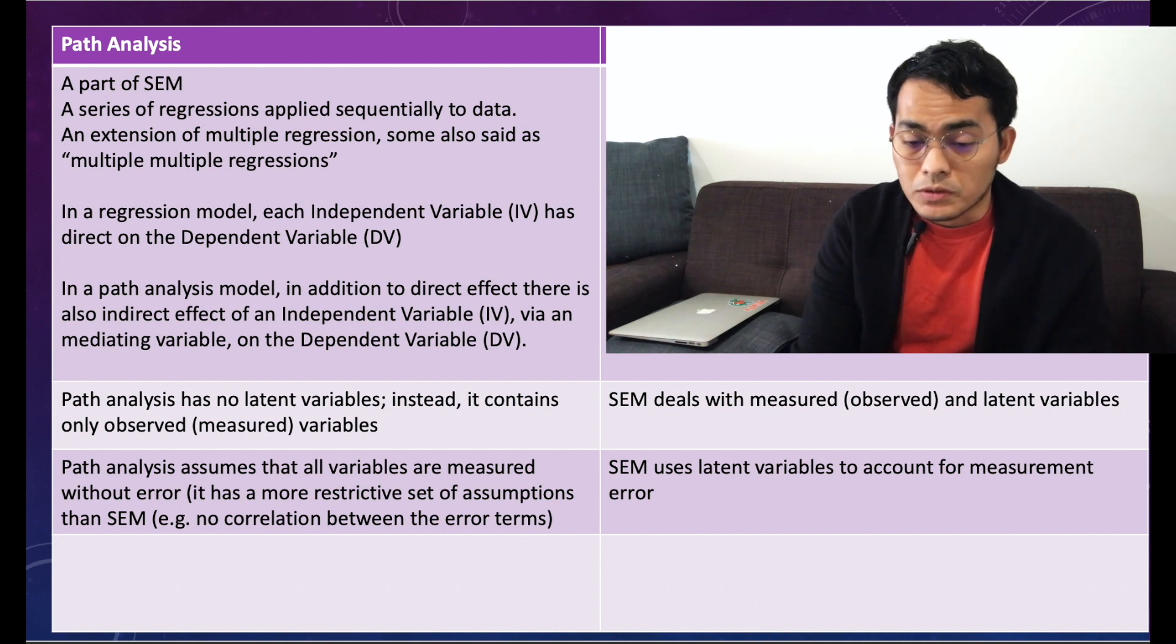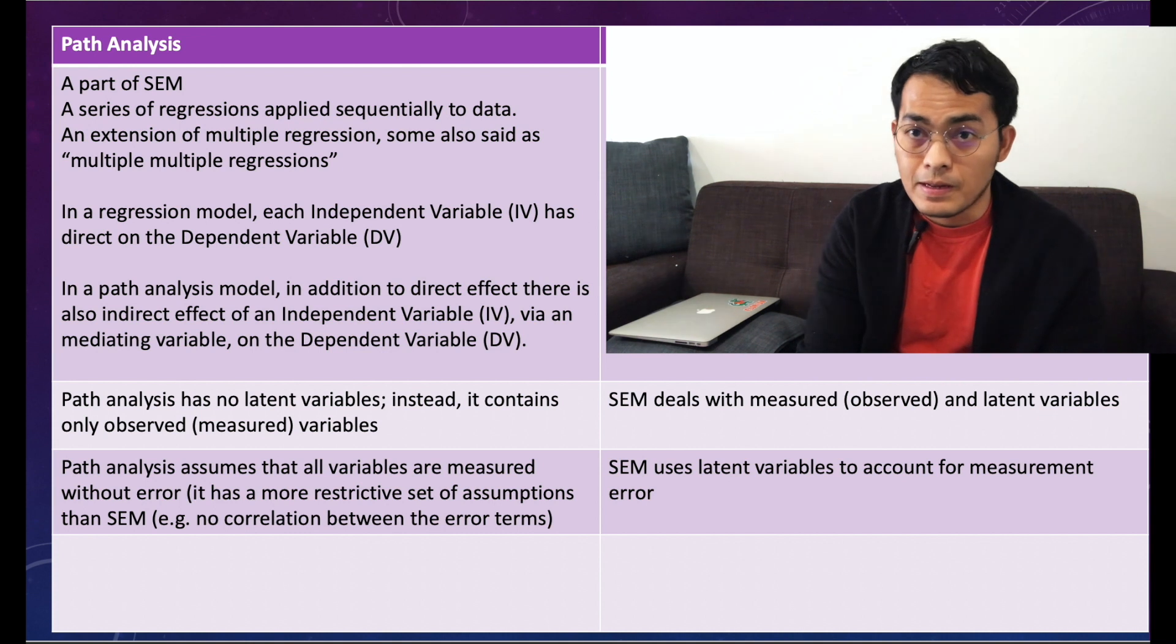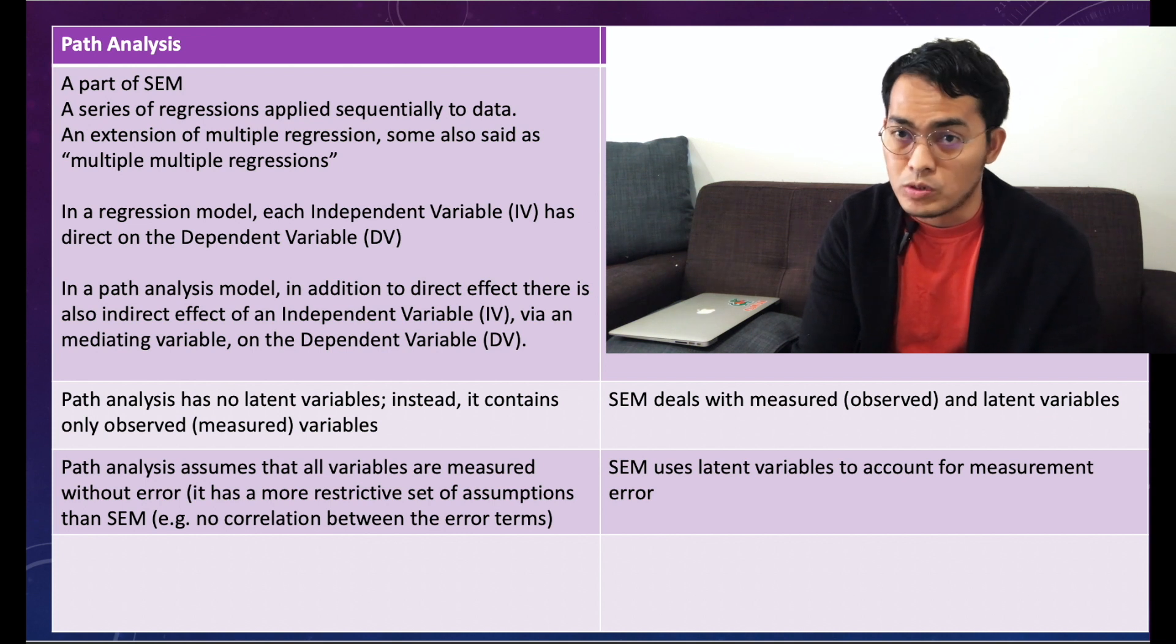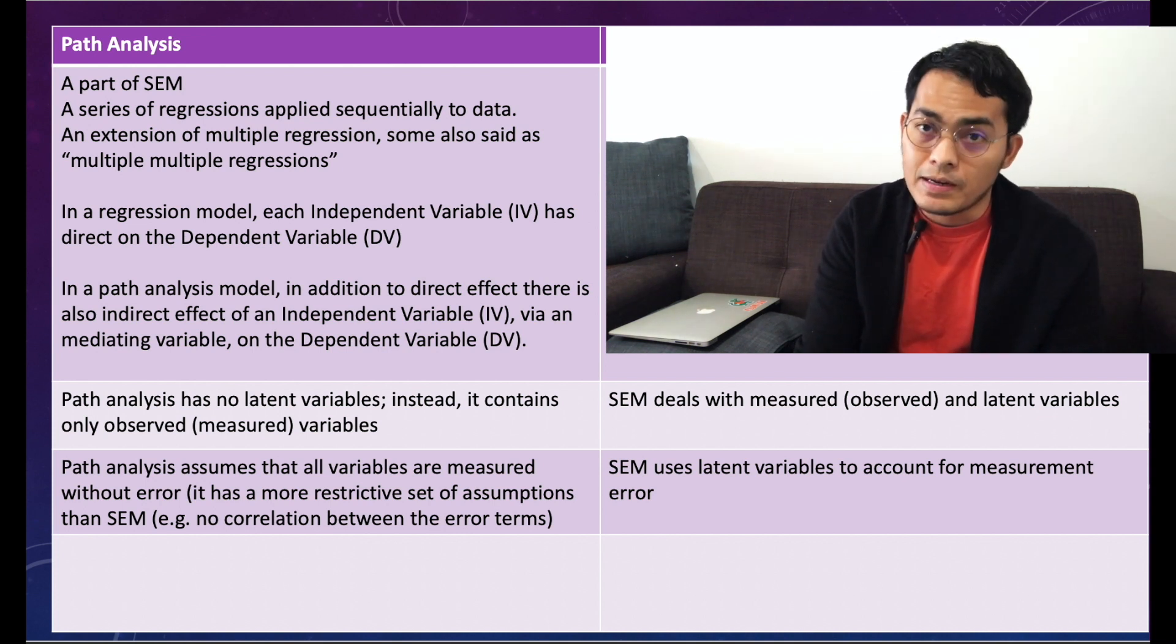In regression model we only see the direct effect between each independent variable to dependent variable, but in path analysis you can see the mediating variables, indirect effect from independent to dependent variables. So in path analysis you can see the mediating and moderating variables.